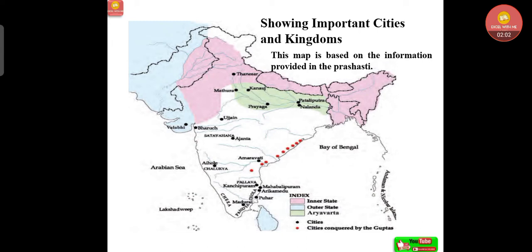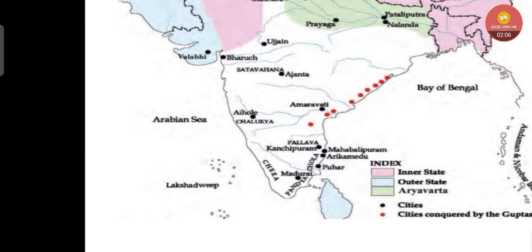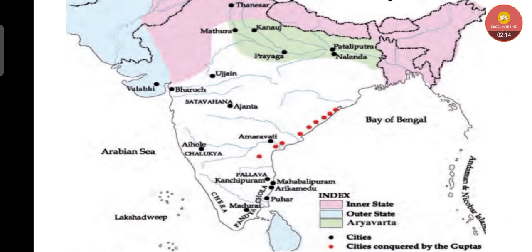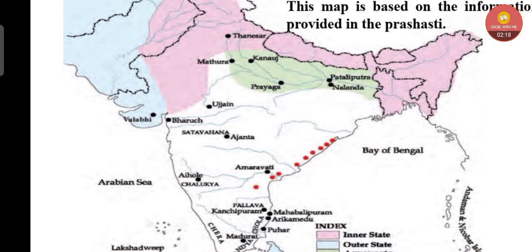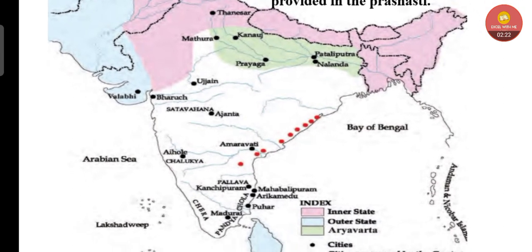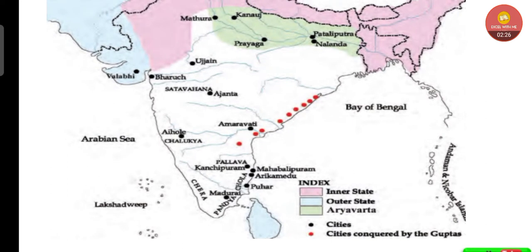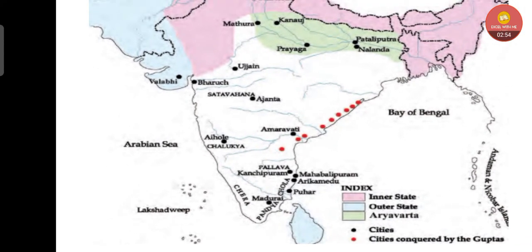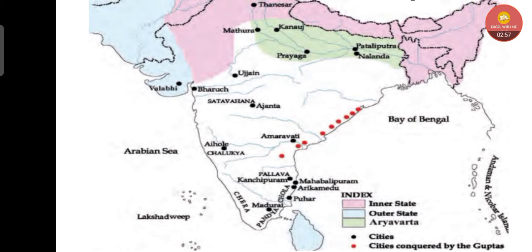This map is based on information provided in the prashastis. We can see inner states in pink color, outer states in blue color, and Aryavarta in green color. Important cities include Kanauj, Prayaga, Pataliputra, and Nalanda. Cities conquered by the Guptas are dotted in red. The southern coastal area — Amaravati — is very important. Black-spotted cities are also important, spread across Pataliputra, Nalanda, Kanauj, Prayaga, Mathura, Thanesar, Broach, Vallabhi, and Ujjain. Satavahanas are shown on the west/southwest side.